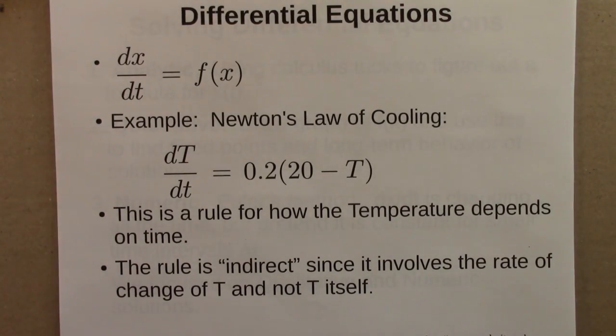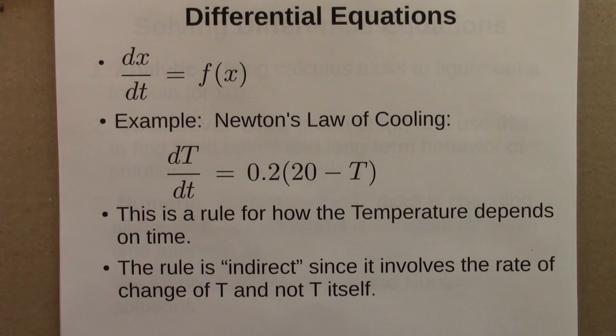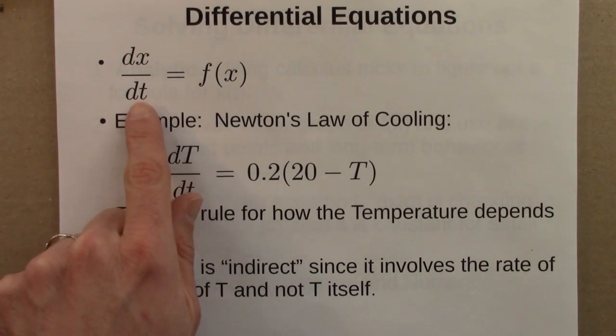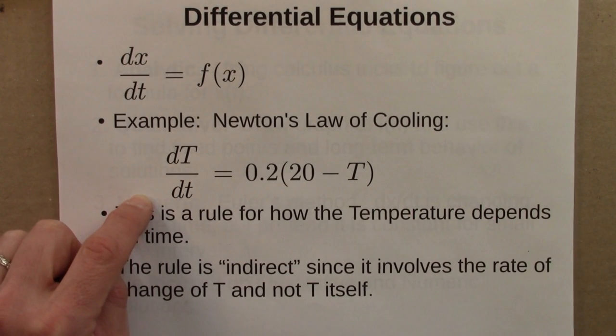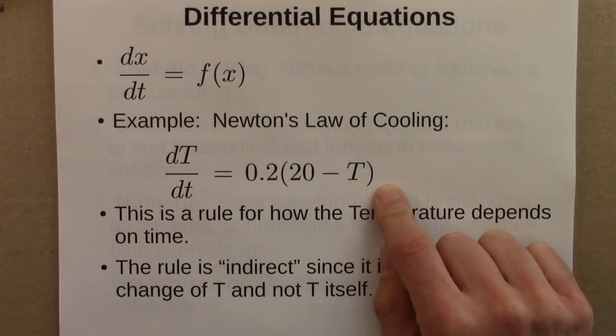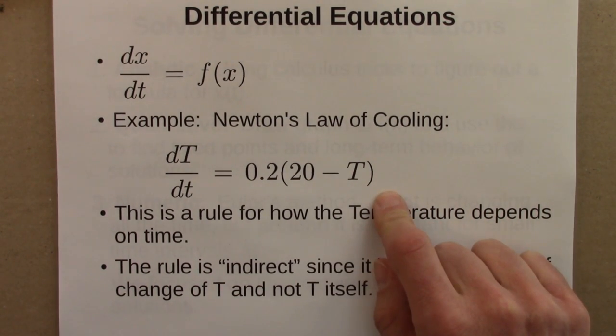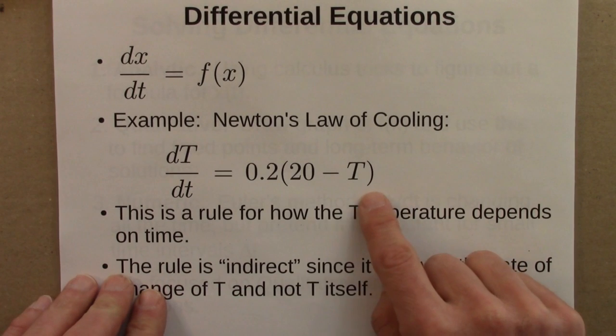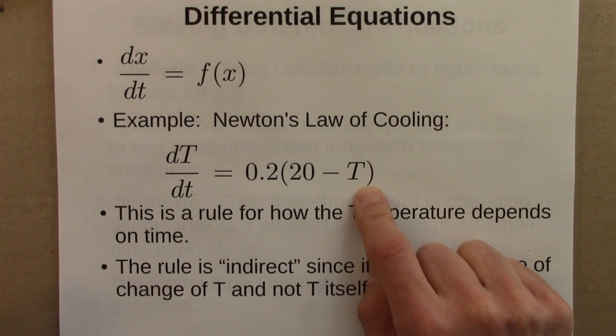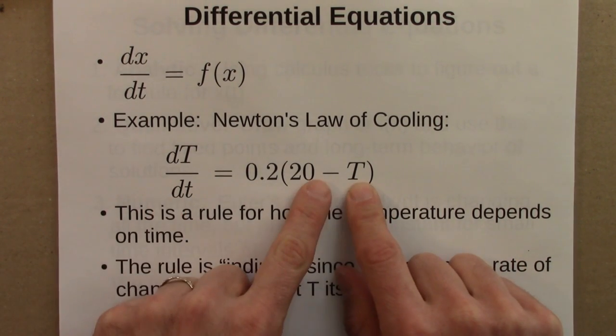We also studied differential equations. These are a little bit trickier to work with mathematically. Here, the variable we're trying to keep track of is x, and it's a function of time. But we're given it in terms of a derivative. The motivating example we looked at was Newton's law of cooling. If you place a cool beer in a warm room, how the temperature changes will be given by this formula. This says that the rate of change of temperature, capital T is temperature, is this particular function of the current temperature.